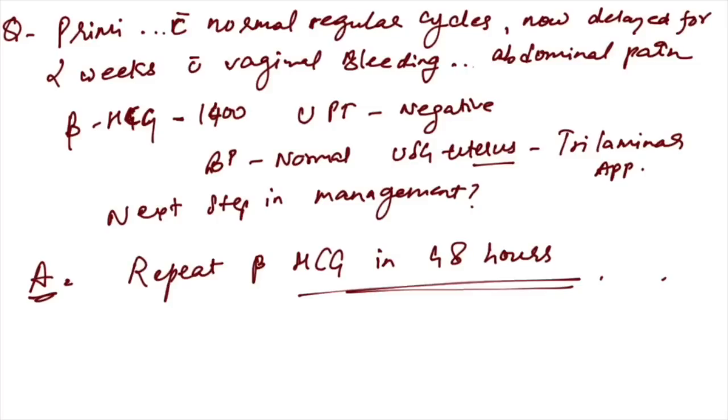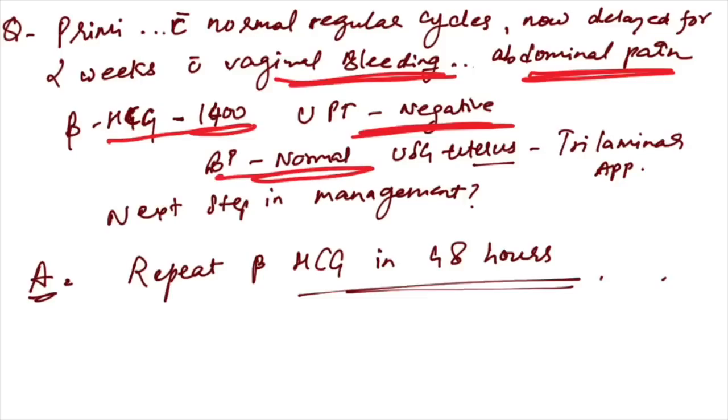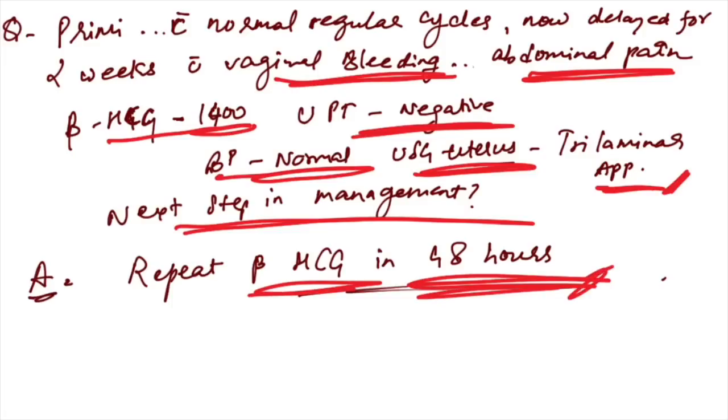Primigravida woman with normal regular cycles, delayed for two weeks with vaginal bleeding with abdominal pain. Beta hCG is 1400, UPT is negative, blood pressure is normal. Ultrasound uterus shows tri-laminar appearance. What is the next step in management? Next step is we have to repeat beta hCG in 48 hours.